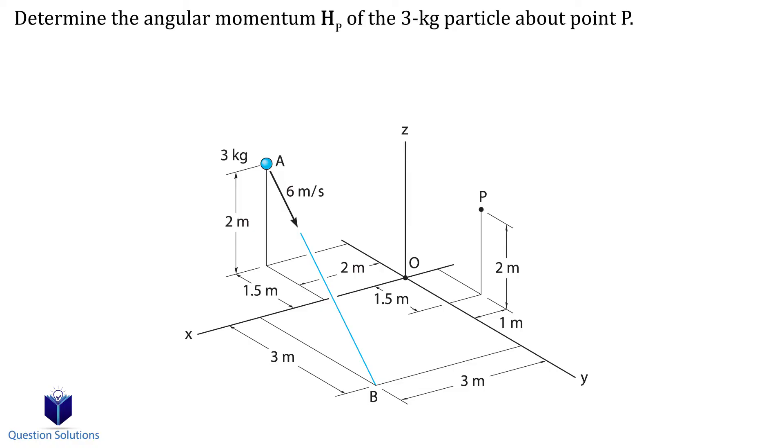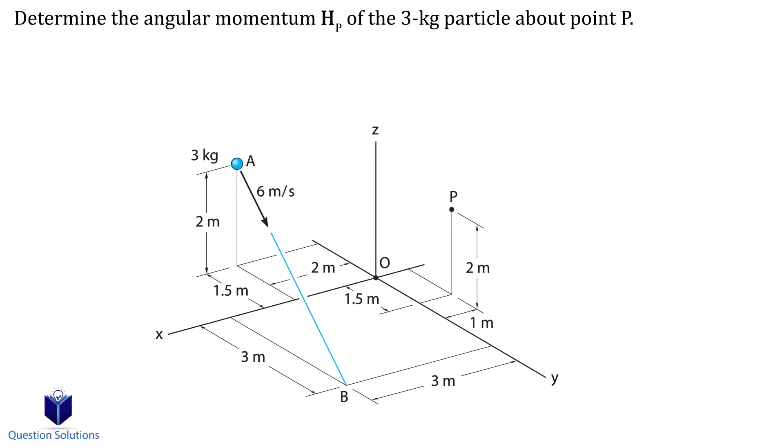Let's take a look at this question, where we need to find the angular momentum of the particle about point P. So first, we need to figure out where the particle and point P is with respect to the origin.